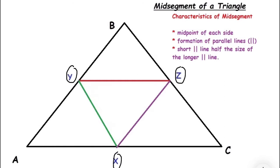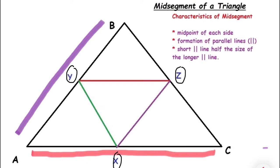This purple line from X to Z is parallel with AB, YZ is parallel to AC, YX is parallel to BC.